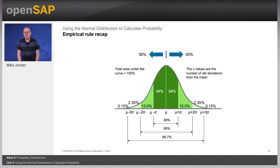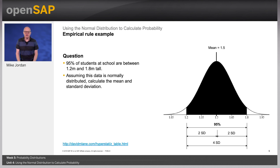Therefore, given a normal distribution, most outcomes will be within three standard deviations of the mean. Question: 95% of students at school are between 1.2 and 1.8 meters tall. Assuming this data is normally distributed, calculate the mean and standard deviation.